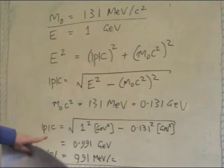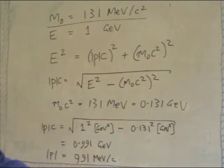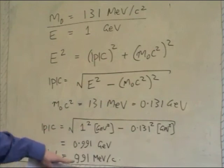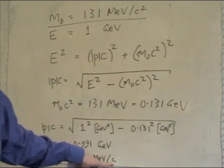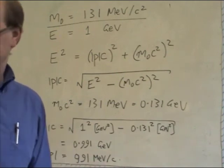Notice again, all I've done here is taken the C, and instead of writing P C equals 991 MeV, I've written P equals 991 MeV over C. This is an acceptable final answer. This is the answer I want.